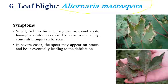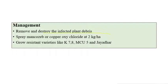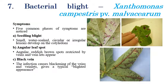Next is leaf blight, caused by Alternaria macrospora. As the name indicates, blighting of leaves occurs. Small pale, blackish, or brown color irregular spots can be seen on leaves. In severe cases, concentric ring spots can be observed in advanced stages of disease development. Bowl size is also reduced, and in later stages due to severe infestation, leaves will defoliate and fall from the stem. Management includes removing and destroying infected plants and spraying mancozeb or copper oxychloride at 2 grams per liter. Resistant varieties include K7, K8, MCU5, and Jayadhar.